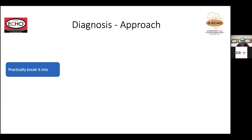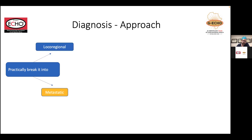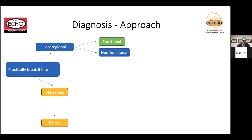I'm going to briefly move on. From a diagnosis perspective, because it's such a broad topic, I've tried to give you more of an approach rather than going into specifics. Practically, I break it up into metastatic and local-regional disease. Metastatic disease is straightforward — you target the underlying primary. If you can't, then it comes down to histological confirmation through biopsy of the metastatic lesion.